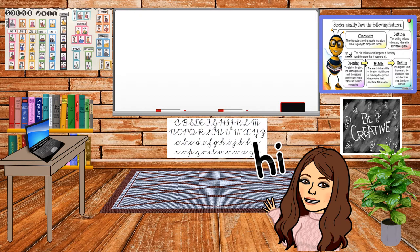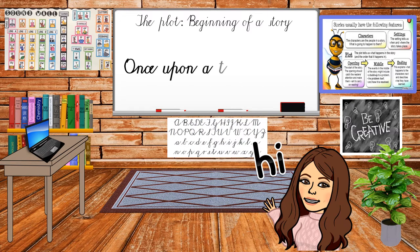Today we're going to start with the plot of our story. We're going to write the beginning of our story — once upon a time. The beginning of the story is the part where you introduce your characters and your setting, and that is one of the most important parts to put your reader right into your story from the word go.